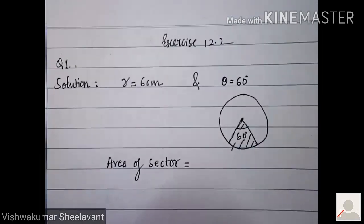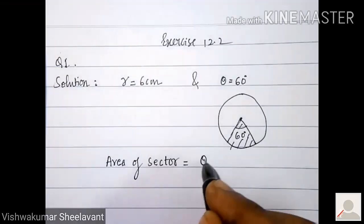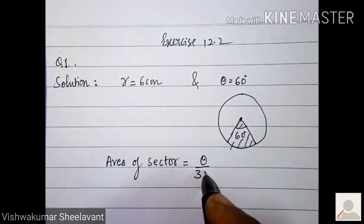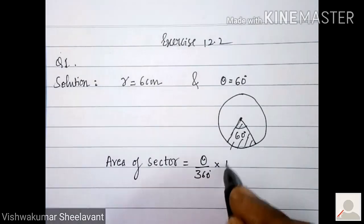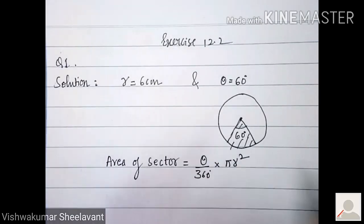Area of sector is equal to theta by 360 degree into pi r square.